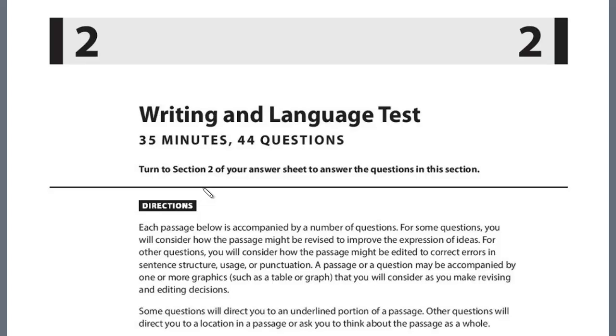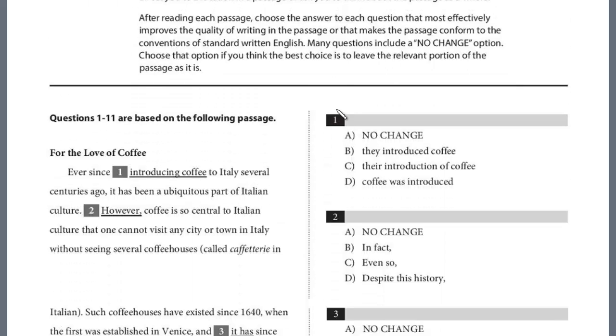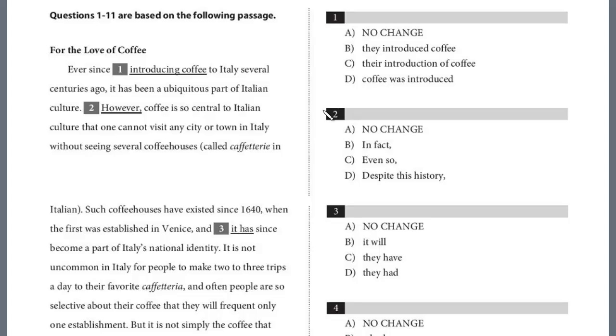In this lesson, we'll begin our review of PSAT Writing Test 2, Section 2, and let's take a look at the first of four passages. This one is titled, For the Love of Coffee. Ever since introducing coffee to Italy several centuries ago, it has been a ubiquitous part of Italian culture.